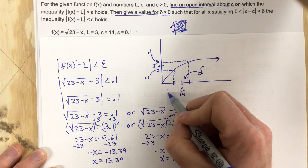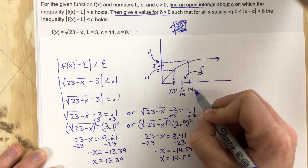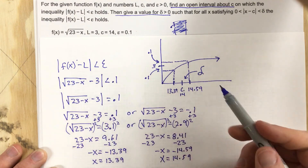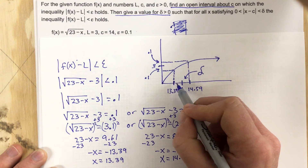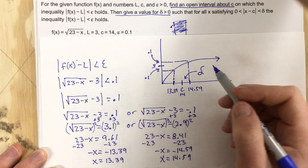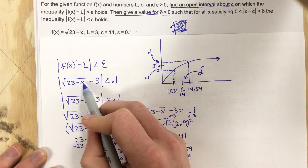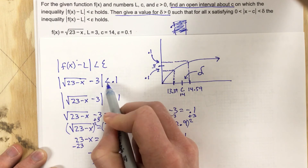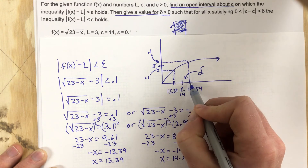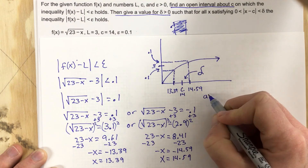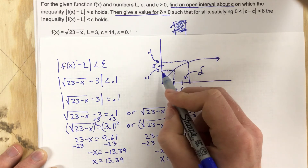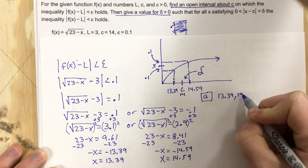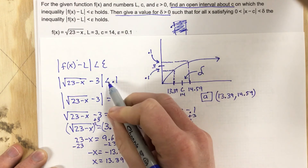Our x values are 13.39 and 14.59. To confirm the solutions fall between them, we check a number in between: plug in x equals 14. We get the square root of 23 minus 14, which is the square root of 9, equals 3. Then 3 minus 3 equals 0, and 0 is less than 0.1. So yes, the solutions run from 13.39 to 14.59. That means for part A, my open interval that produces y values between 2.9 and 3.1 is (13.39, 14.59), with parentheses because it's a strict less than.